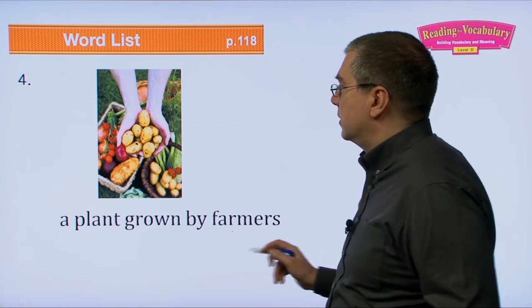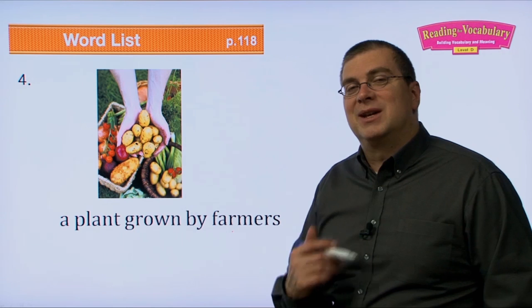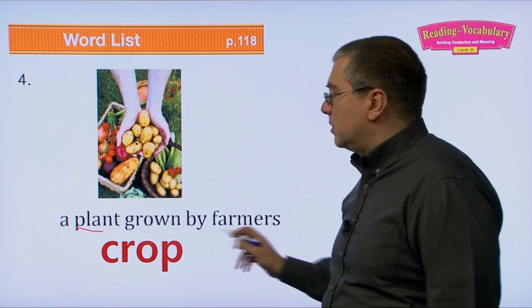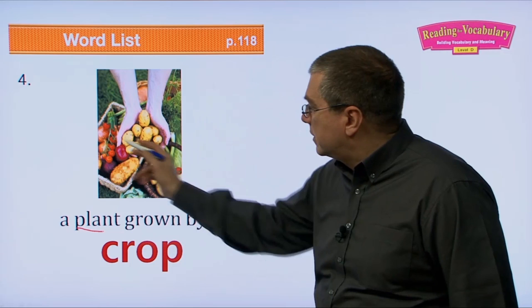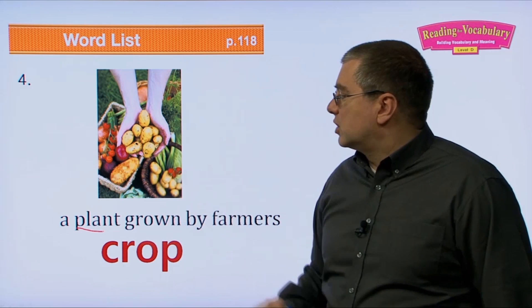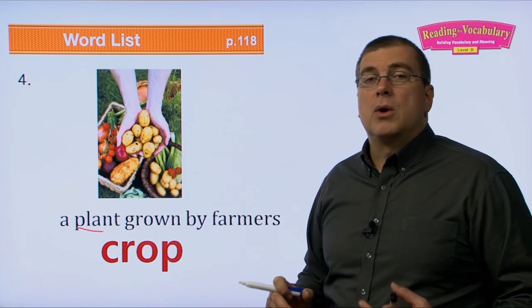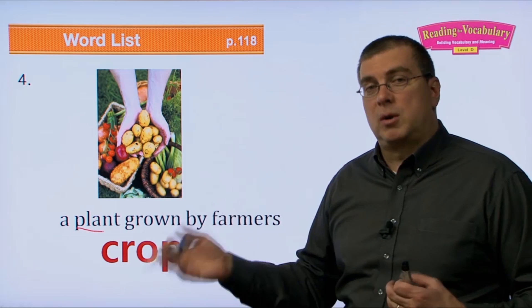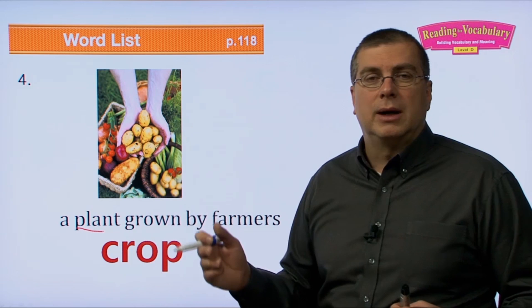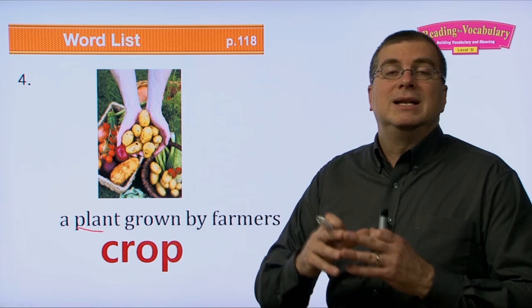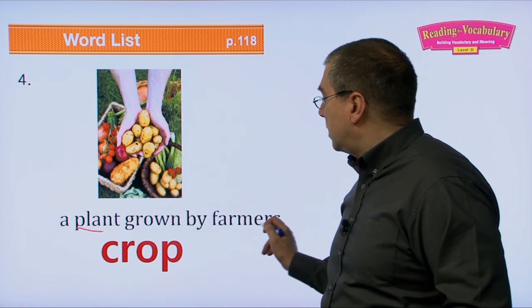Number four: a plant grown by farmers — that's a crop. Usually crops are things we eat, like potatoes, tomatoes, celery, or squash. But it's not just food — sometimes farmers grow things not eaten but used for other purposes, like barley used to make beer. Any plant grown by farmers is called a crop.